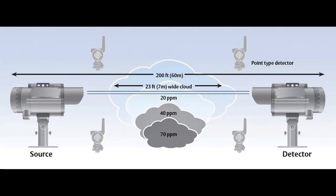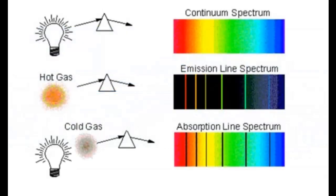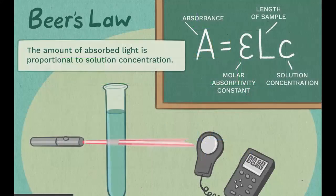The core principle behind LOS gas detectors is absorption spectroscopy. Different gases absorb light at specific wavelengths. By analyzing the absorption characteristics of the transmitted light, the concentration of the gas in the path can be determined. The Beer-Lambert Law relates the absorption of light to the properties of the material through which the light is traveling.